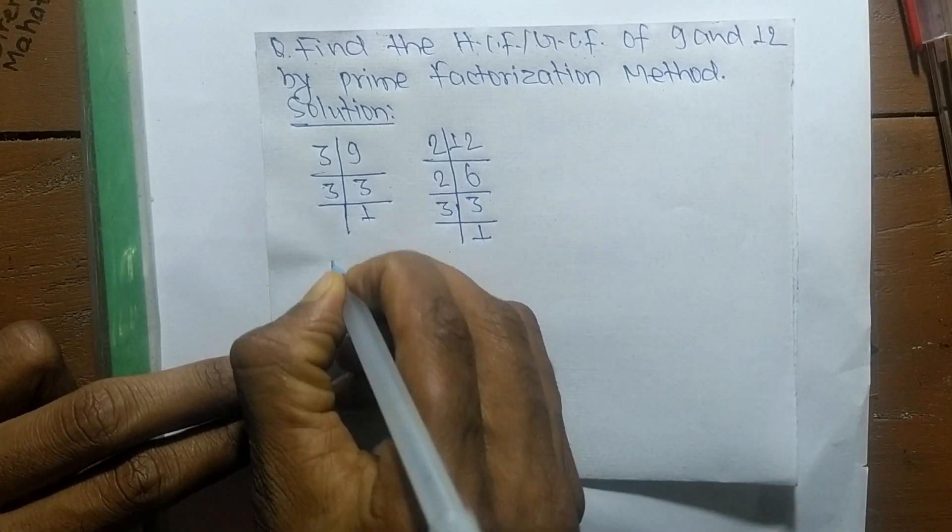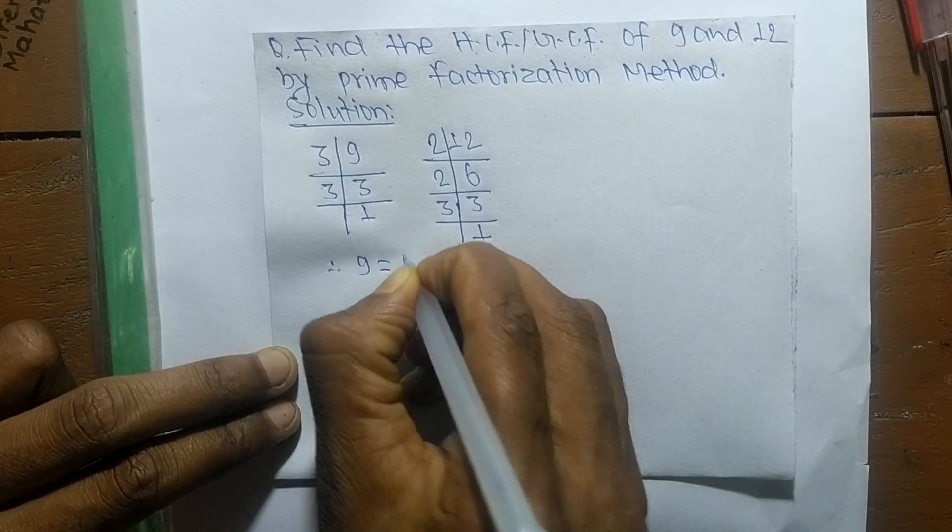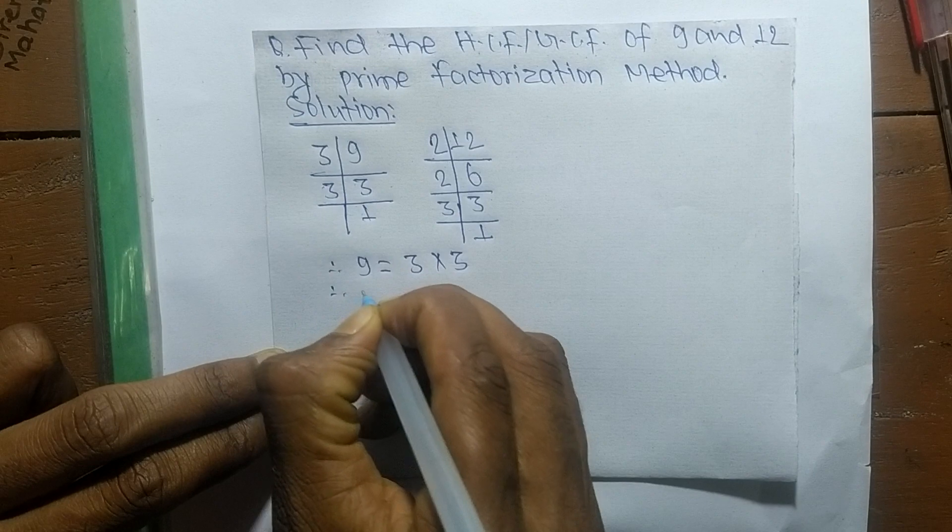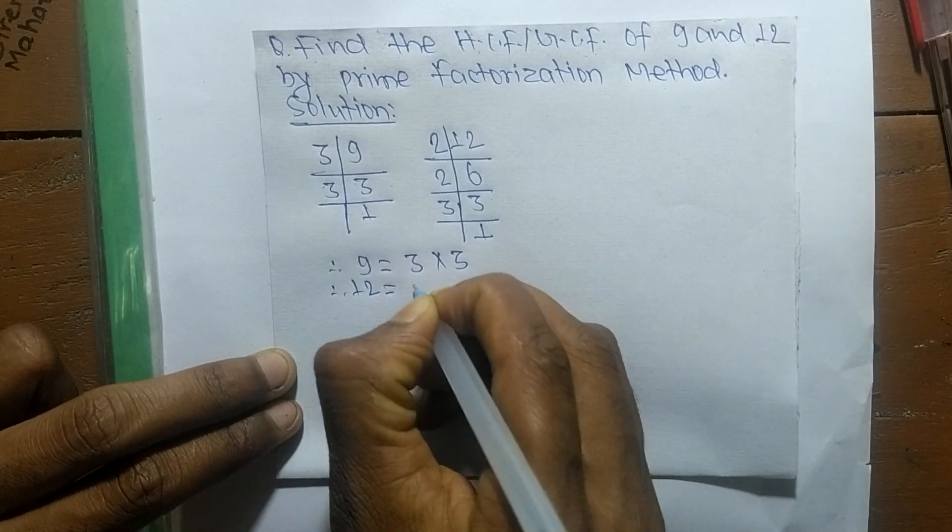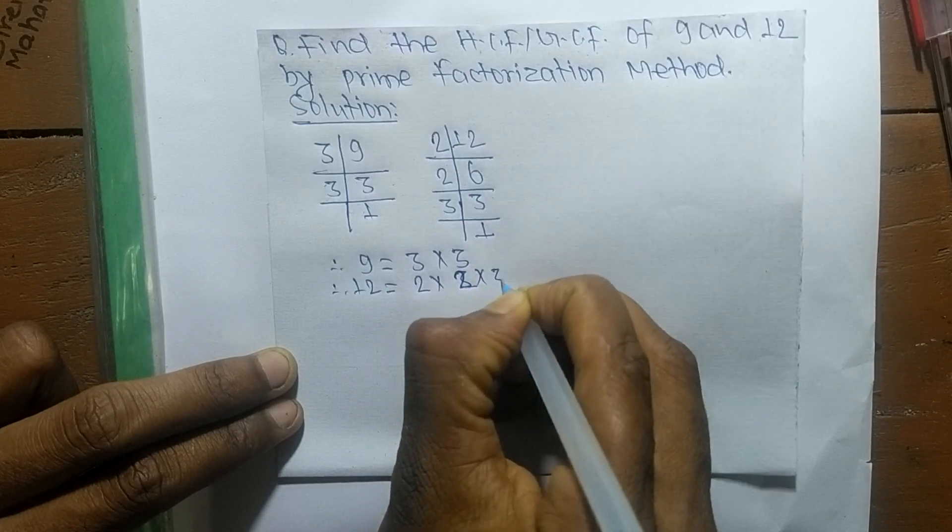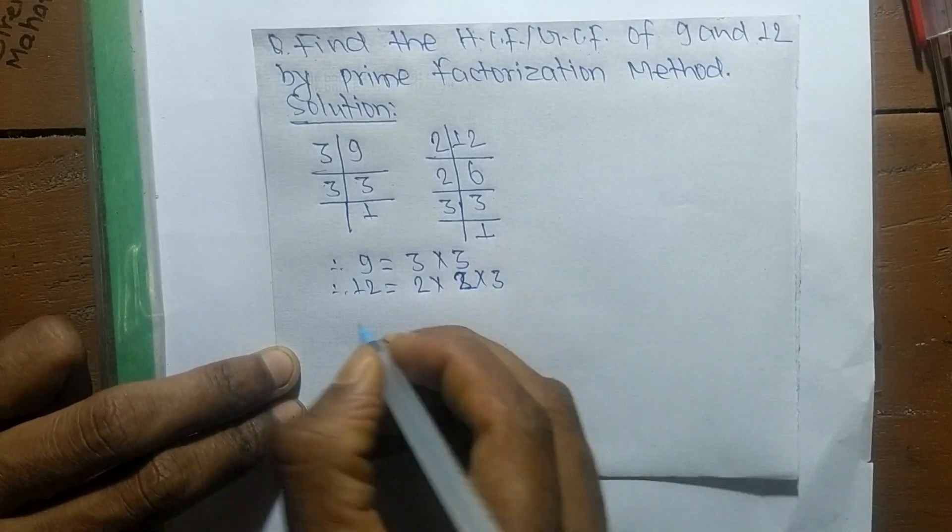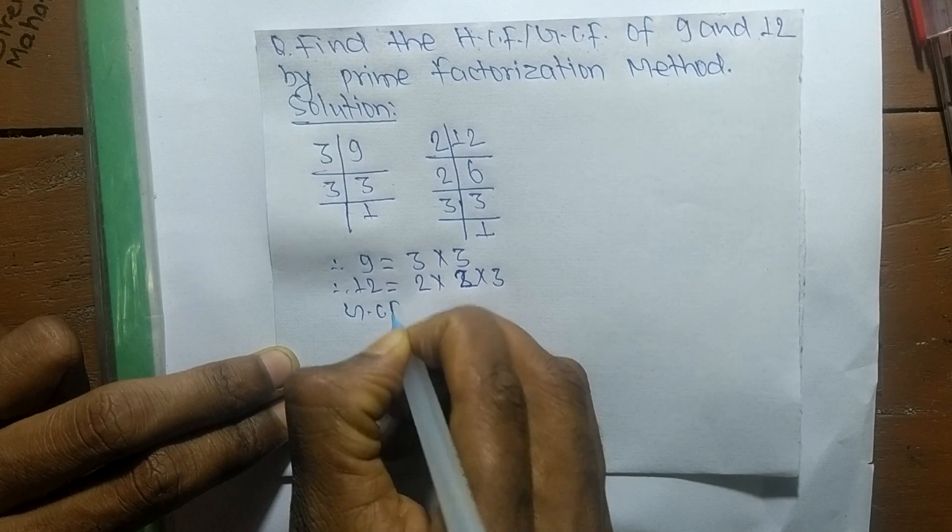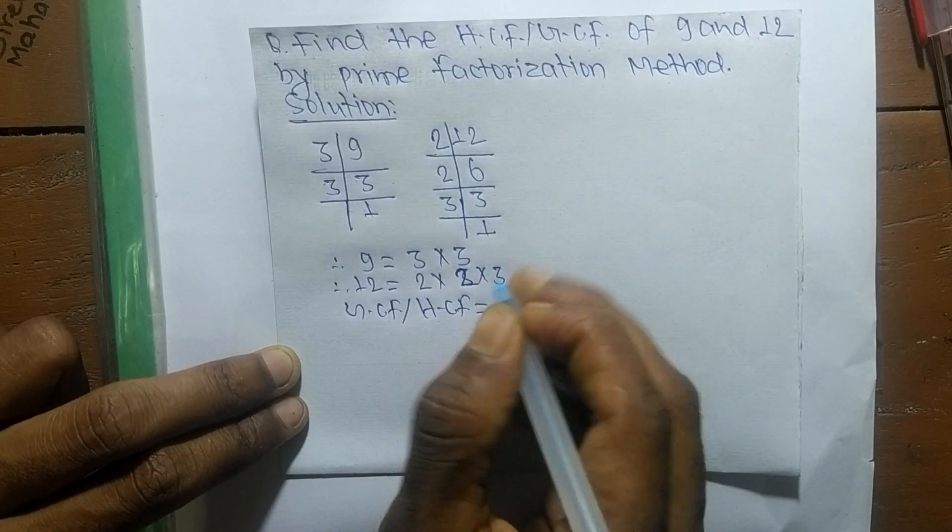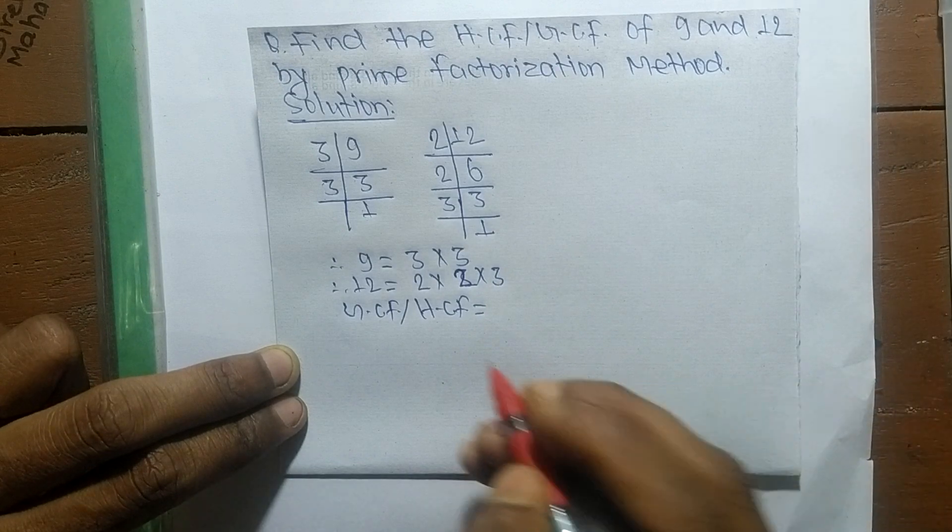we can write 9 equals 3 times 3, and 12 equals 2 times 2 times 3. So GCF or HCF equals—now we determine the common factors in both the prime factorizations.